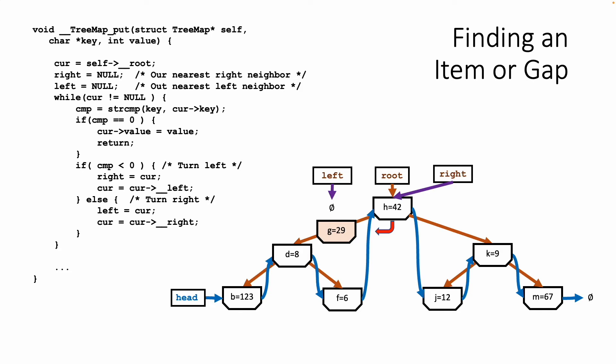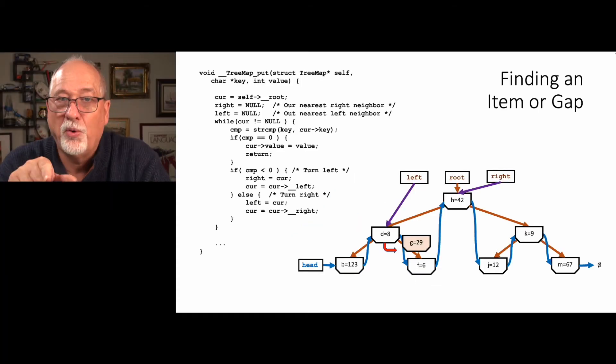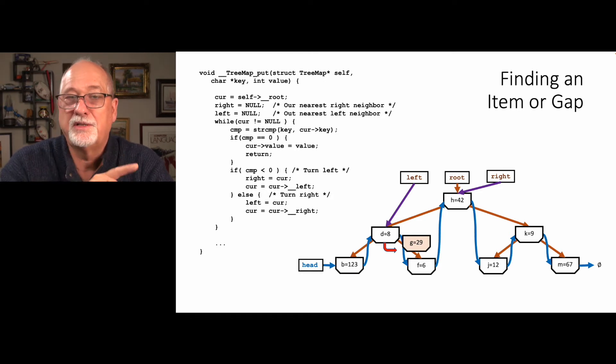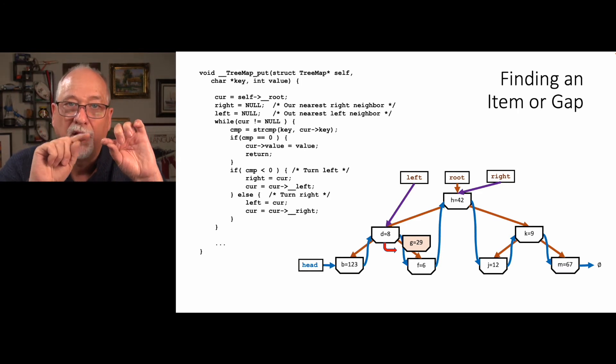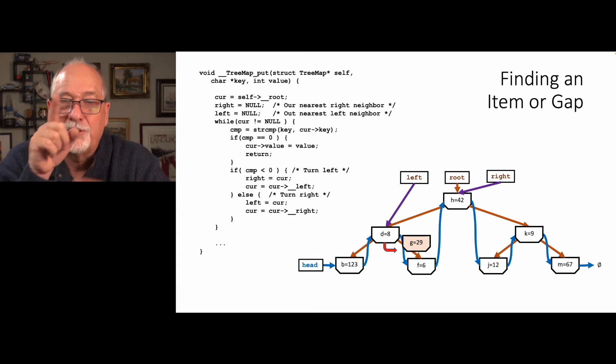The next time when we're going to turn right, which is what we're going to do next, it's going to remember where we left. We're now comparing g to d, and g is greater than d. So now we're going to turn right. But now we're going to update left. So d, at this point in our search, d is the largest number less than, or the largest key less than g. And h is the smallest key greater than g. You see how left and right are like breadcrumbs as we're sort of pachinkoing our way down this tree.